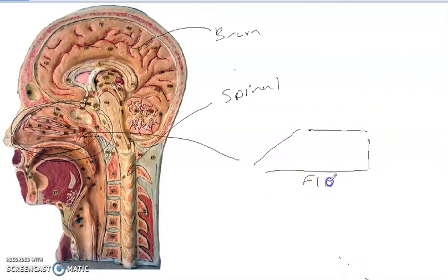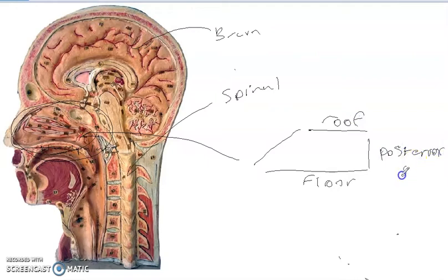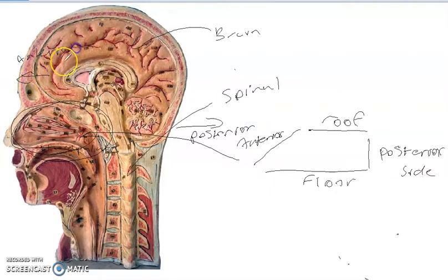You can see the floor is the bottom part marked by the hard palate. I just want to make it clear that this is the posterior side and this is the anterior side. It's a bit easier to see it like this. First we'll focus on the external areas of the nose, so let's get straight into that.